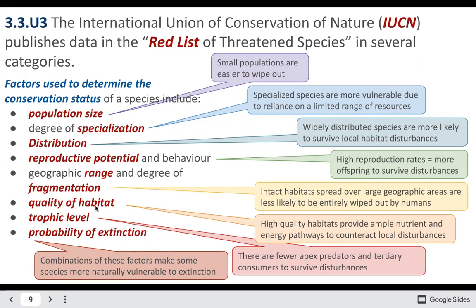What's the overall habitat quality in terms of nutrients and pollutants? What's the trophic level of the organism? Apex predators are often more difficult to conserve because there tend to be fewer of them, as we know from the 10% rule. And overall, what's the probability that the organism will go extinct? This all determines whether a population is classified as endangered, vulnerable, or of least concern.